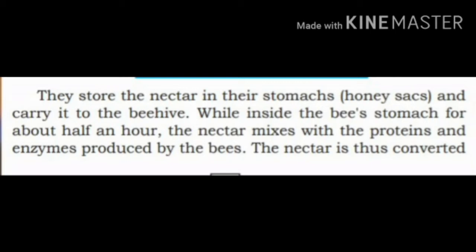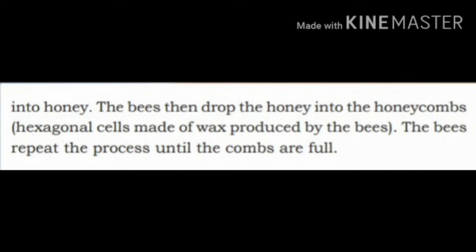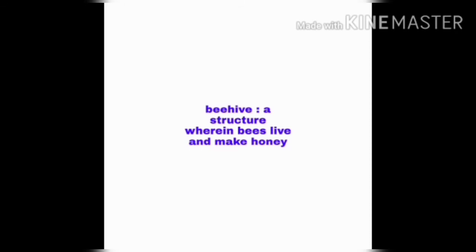They store the nectar in their stomachs and carry it to the beehive. While inside the bee's stomach for about half an hour, the nectar mixes with the proteins and enzymes produced by the bees. The nectar is thus converted into honey. The bees then drop the honey into the honeycombs — hexagonal cells made of wax produced by the bees. The bees repeat the process until the combs are full. Beehive means a structure wherein bees live and make honey. Enzyme means a chemical substance that is produced.